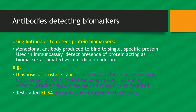Antibodies can also be used to detect biomarkers. A monoclonal antibody is produced to bind to a single specific protein. This is used in a technique called immunoassay, which is used to detect the presence of a protein acting as a biomarker associated with a medical condition. For example, in the diagnosis of prostate cancer, if the prostate gland is cancerous there will be a high level of the protein PSA. This is tested using a monoclonal antibody with an enzyme attached to allow the presence of the antibody to be detected. The test is called an ELISA test, which stands for enzyme-linked immunosorbent assay.